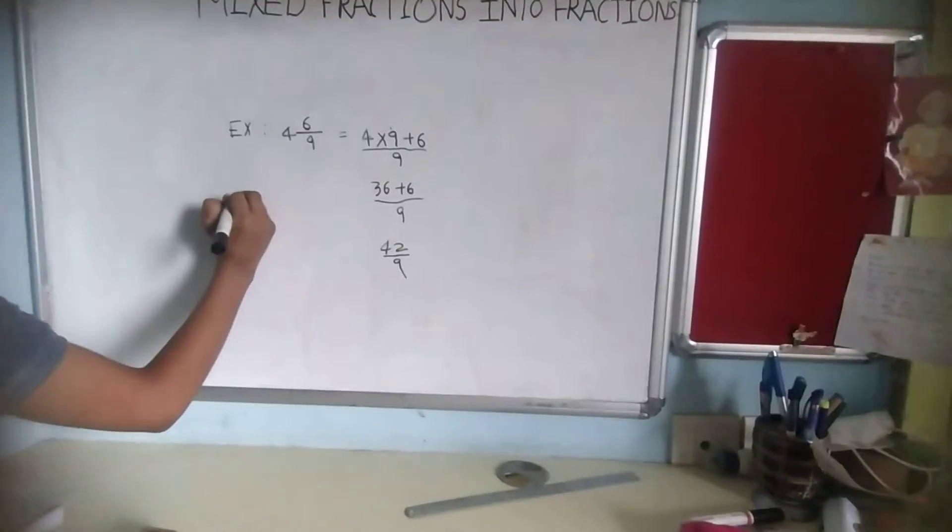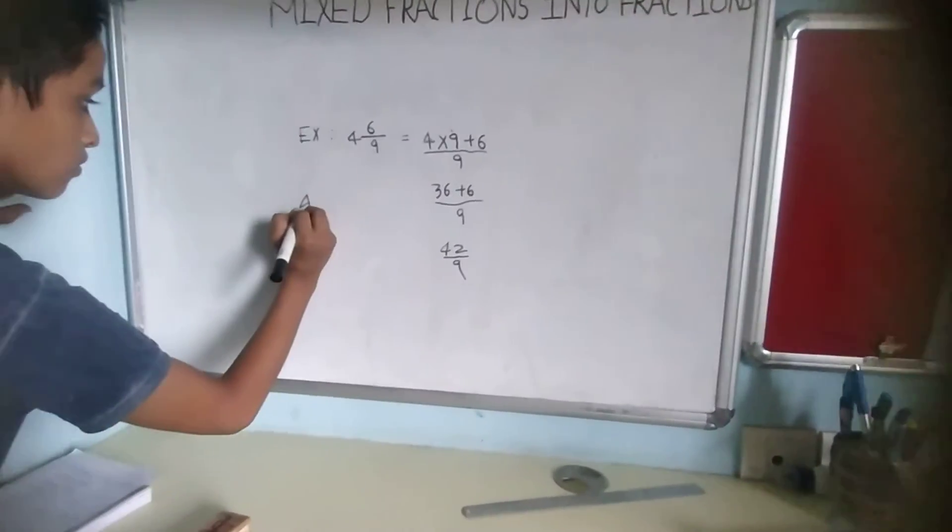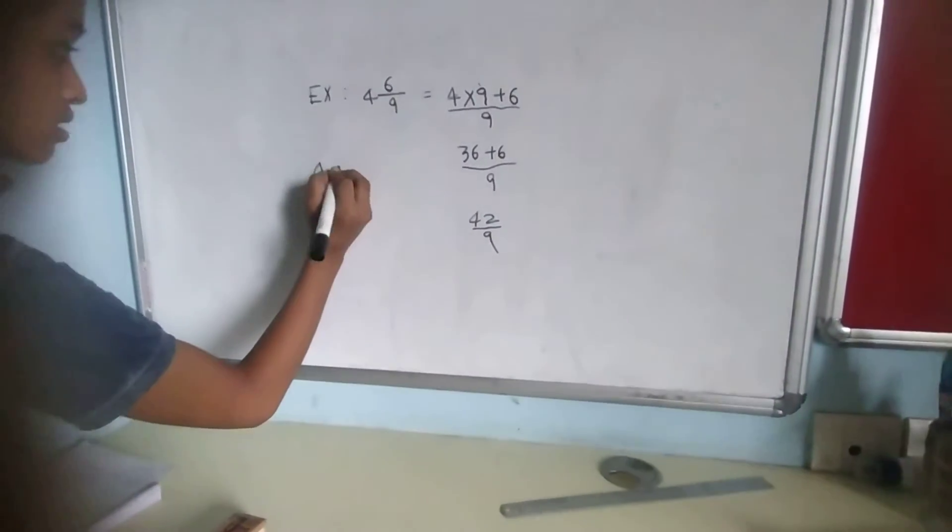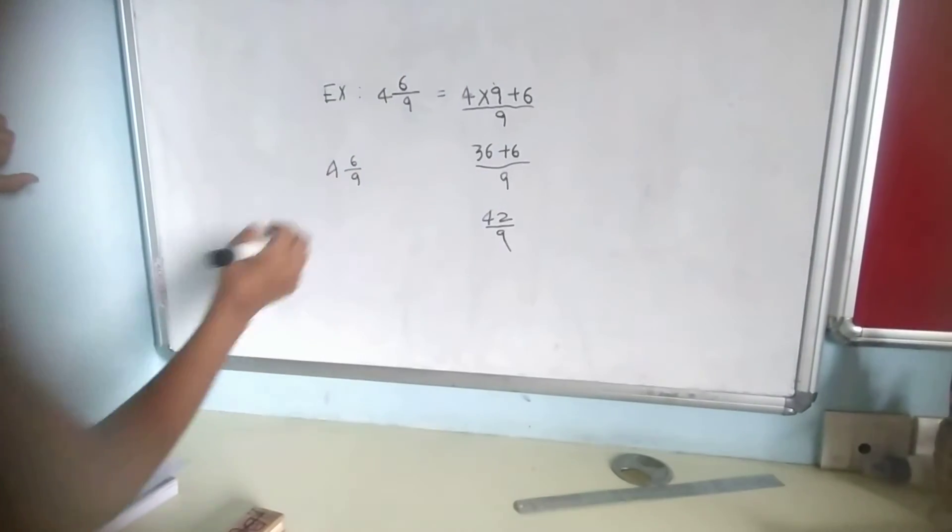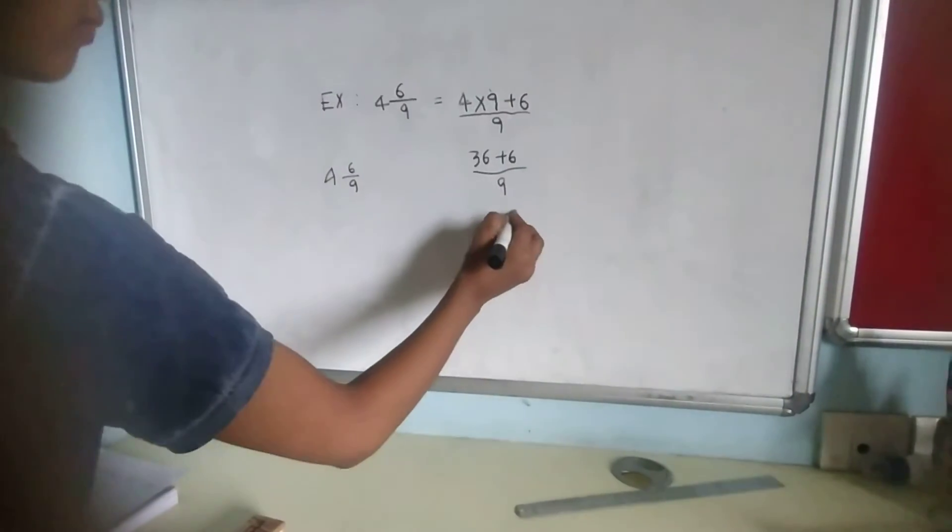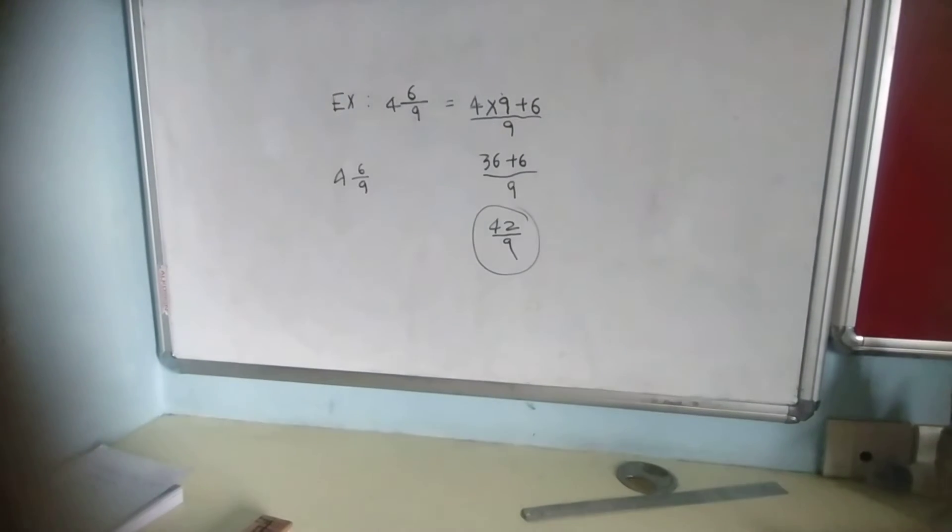So 4 and 6 by 9 we can write as 42 by 9.